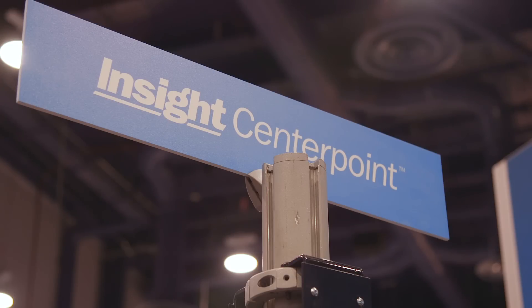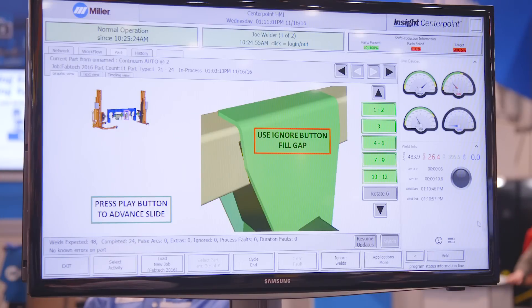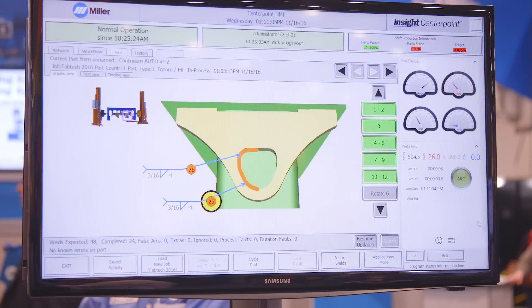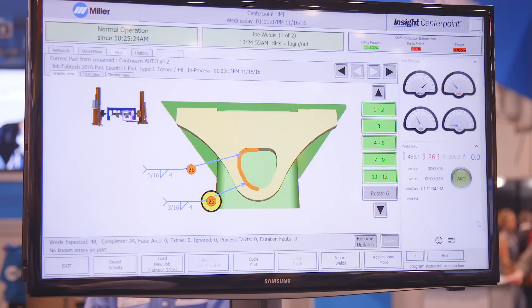The InSight information management system allows you to capture weld information, quality of welds, quantity of welds, all of the things that are important to you in manufacturing, all of the things that are important to capture what your productivity is.